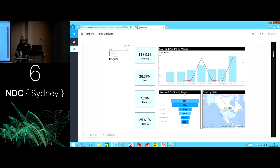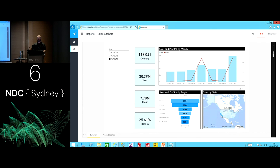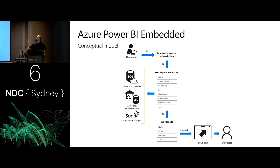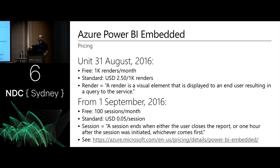Speed up time to value without redesigning your existing app — just start embedding new visuals based on the data the app is already using. From a payment point of view, this gets interesting. Originally they said you'd pay per render, but based on feedback in preview, they've changed to charging five cents per session. A session is typically an hour — after an hour, the session drops. That's reasonably cost-effective: five cents per session per user. That's the new pricing model commencing from the 1st of September. You get 100 sessions free per month, then every other session will be five cents US. The session ends when either the user closes the report or one hour after initiation, whichever comes first.